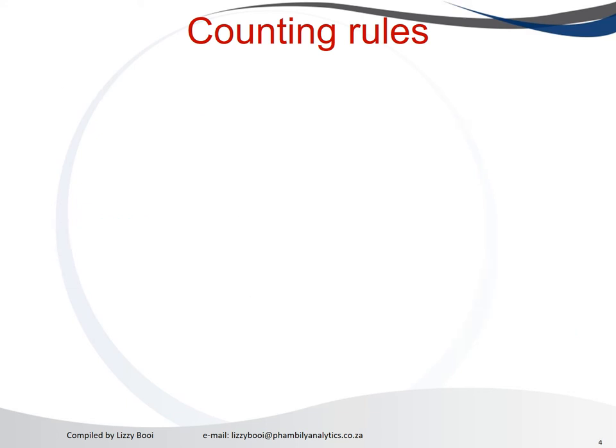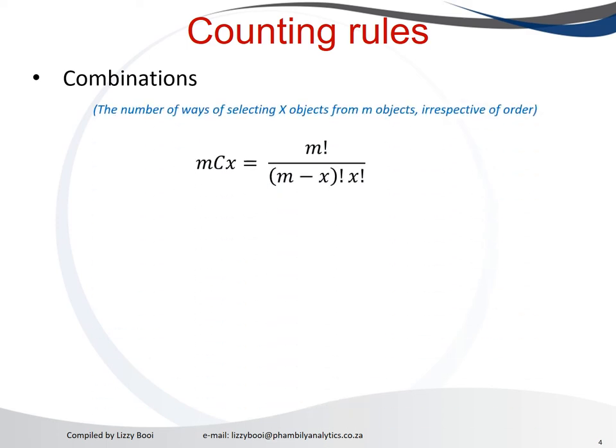It's called the combination. And combination is where you are not told the order or the preference of how things need to be done. How do we do that? We use the formula mCx, which is m factorial divided by m minus x factorial times x factorial.